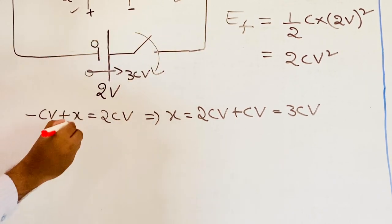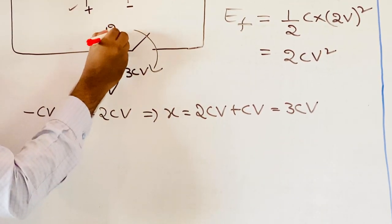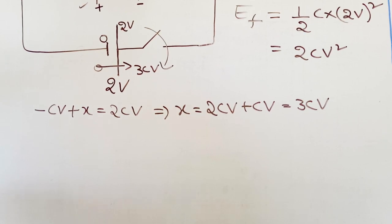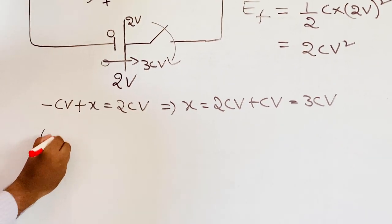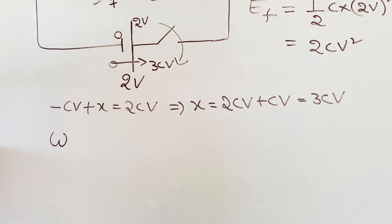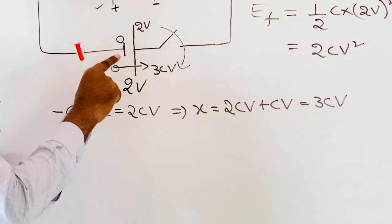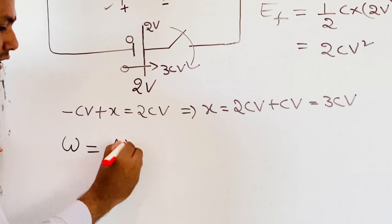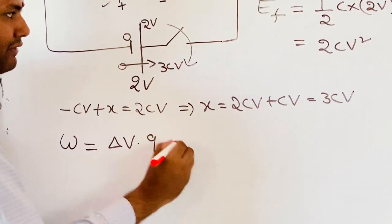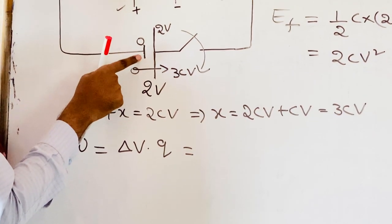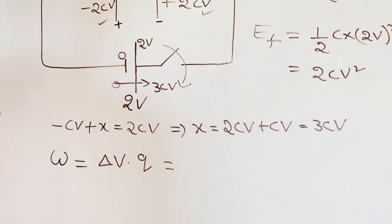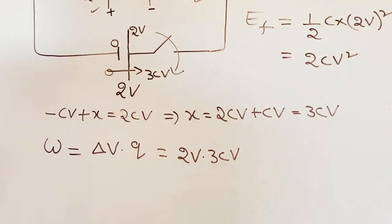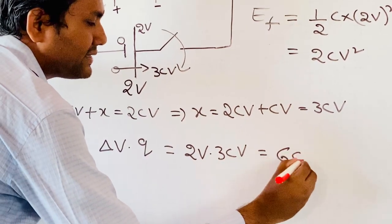The negative terminal lies at 0 potential and the positive terminal at 2V potential, so the potential difference is 2V. The work done by the battery is W equals delta V times Q, which is 2V times 3CV, giving 6CV² Joules. This is the total amount of energy supplied by the battery.